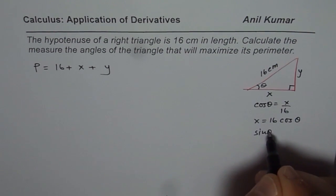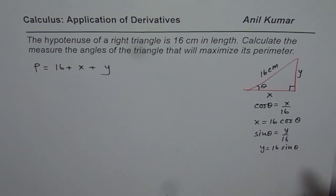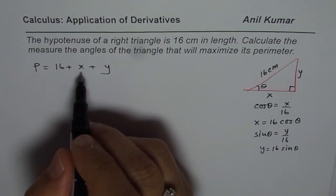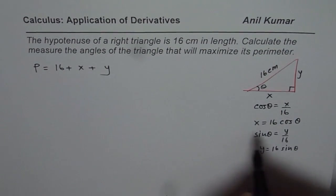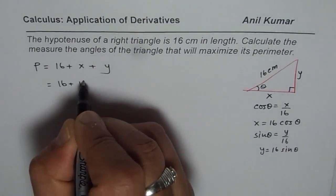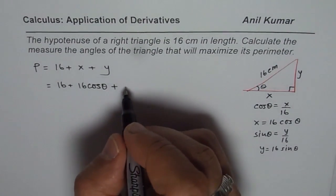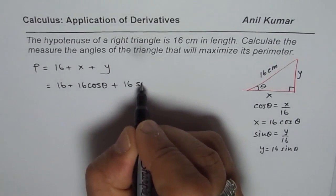Similarly, we know sin theta is y over 16 and y equals to 16 sin theta. So, we could replace x with 16 cos theta. We have perimeter as 16 plus 16 cos theta plus the opposite side y as 16 sin theta.